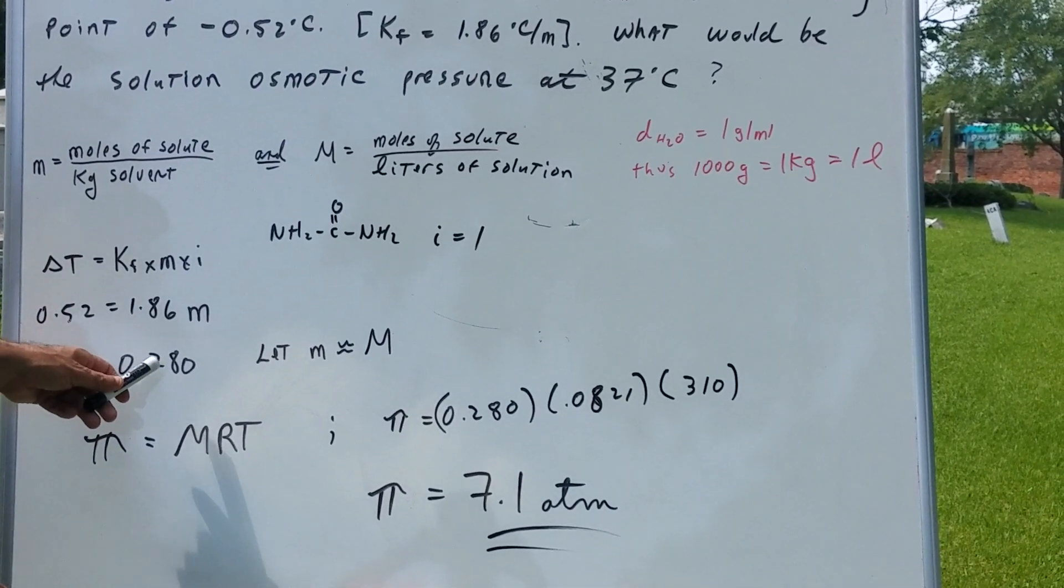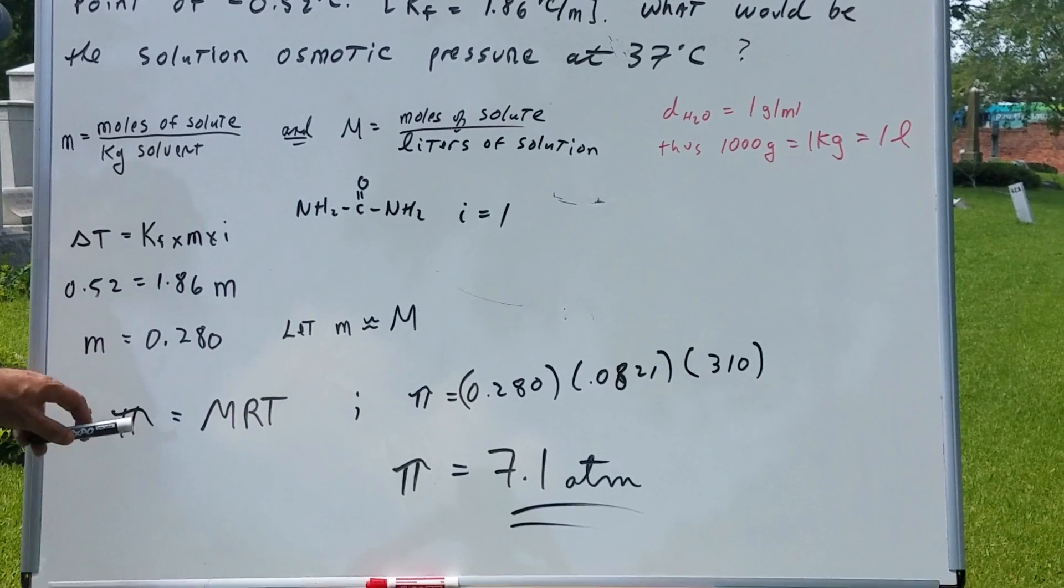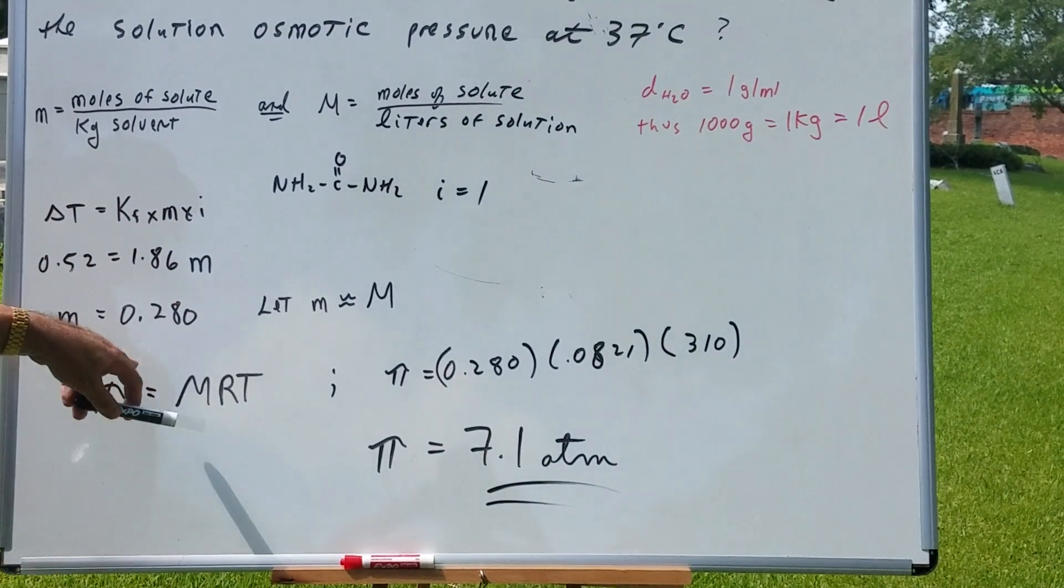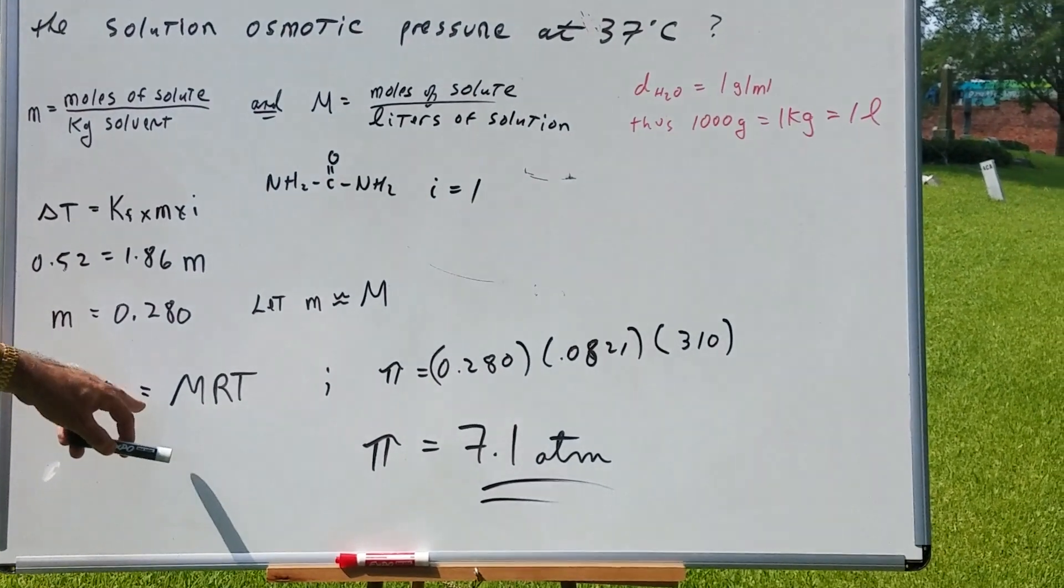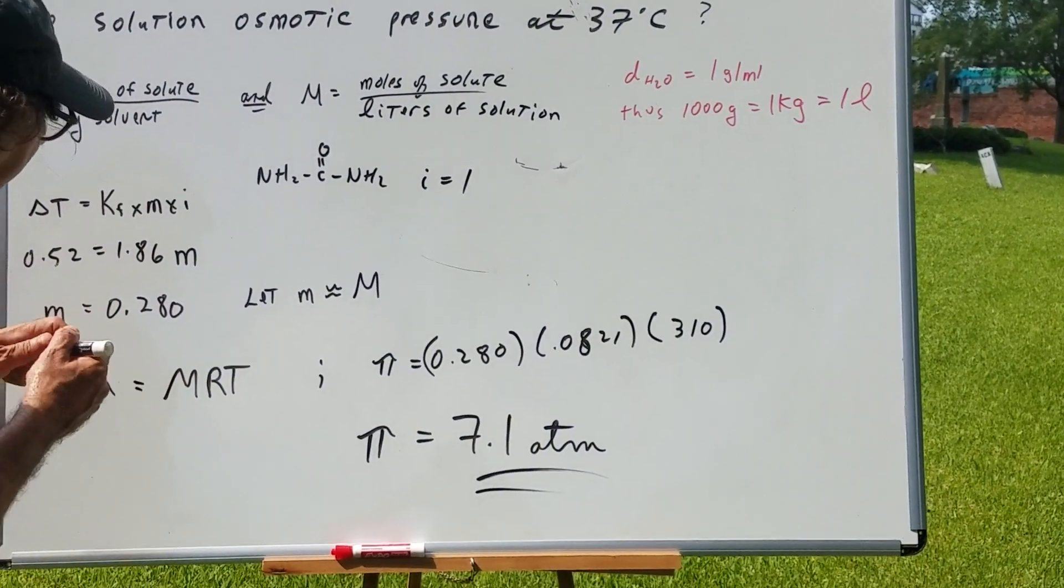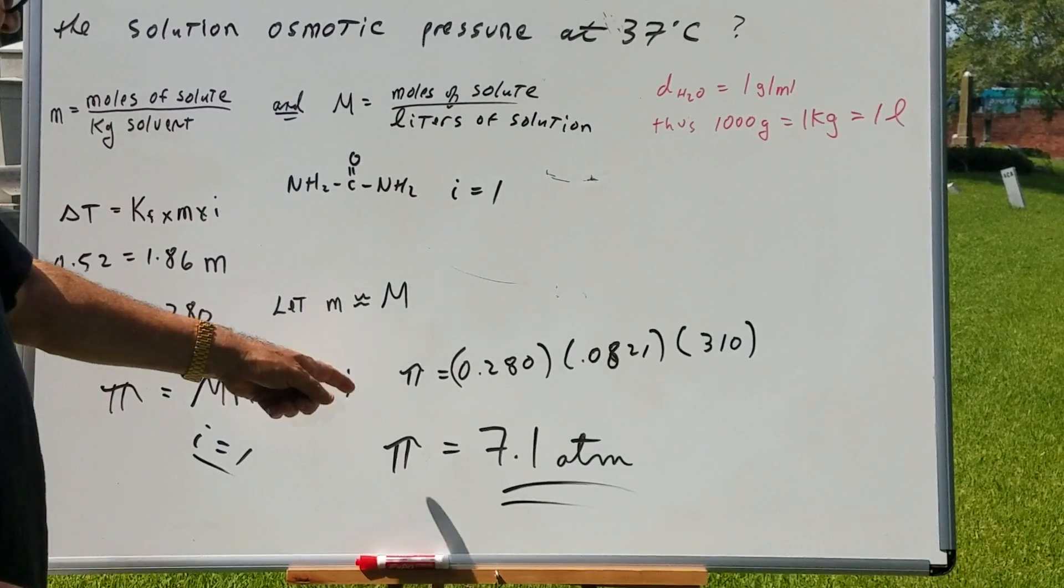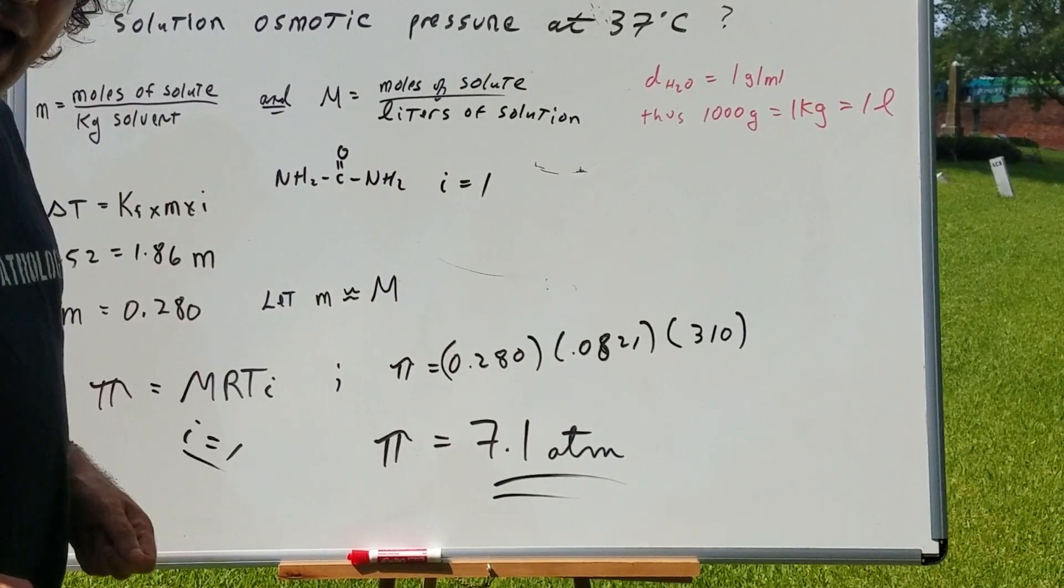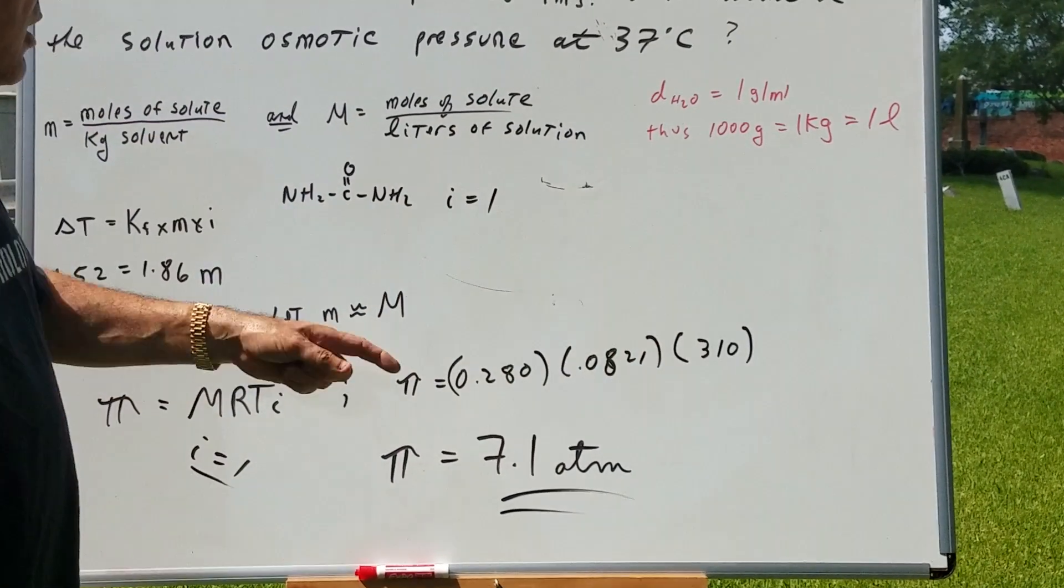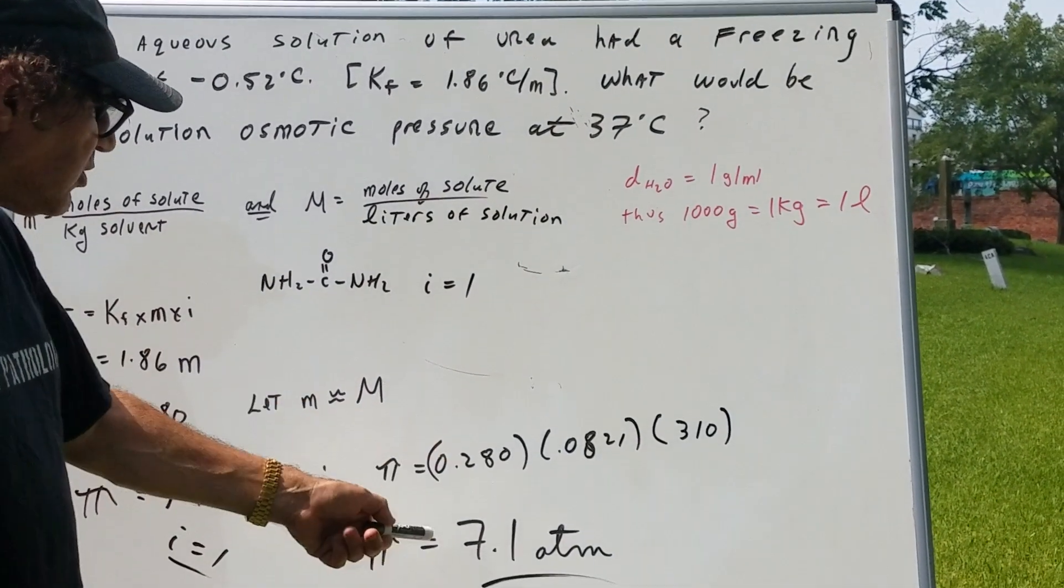Now, little m is 0.280, which is approximately equal to big M. That's the gimmick. Now that you know that big M is equal to little m, I can say that pi, which is the osmotic pressure, is M times R times T times i. But we all know i is equal to 1. So we're going to plug it. Pi. There's the M. There's the R constant. And there's the temperature. Notice I had to convert Celsius into Kelvin. And when you multiply it out, you get 7.10 atmospheres.